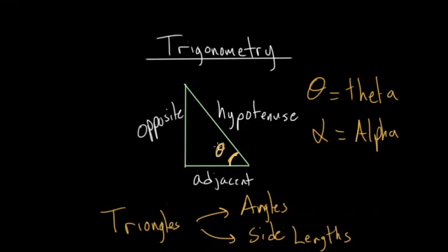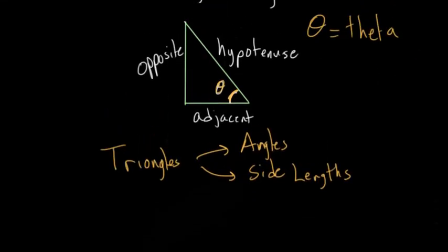But one of the key features of trigonometry is essentially: given a certain angle, what's the relationship between, let's say, the opposite side of the triangle and the hypotenuse? Or you could look at the relationship between the adjacent side and the hypotenuse, or the hypotenuse and the opposite side. Essentially all of these different ratios we've given different names to.